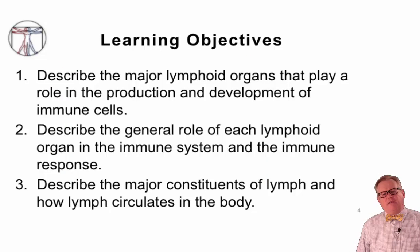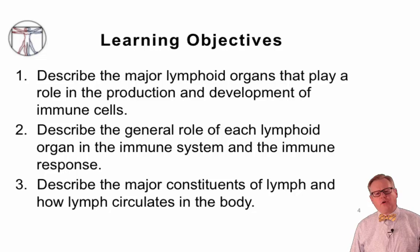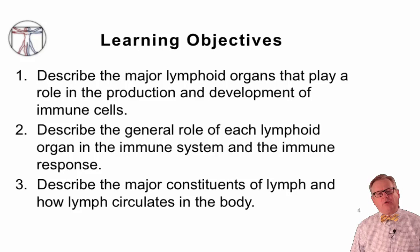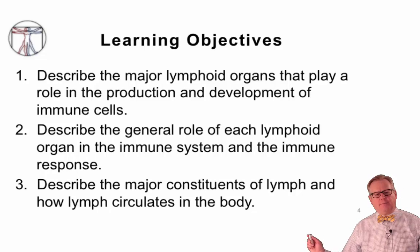At the end of this presentation, you should be able to describe the major lymphoid organs that play a role in the production and development of immune cells, describe the general role of each lymphoid organ in the immune system and the immune response, and describe the major constituents of lymph and how lymph circulates in the body.